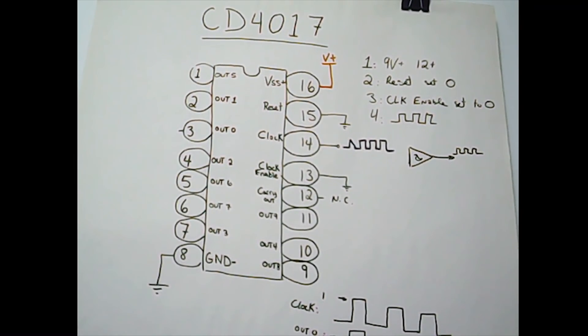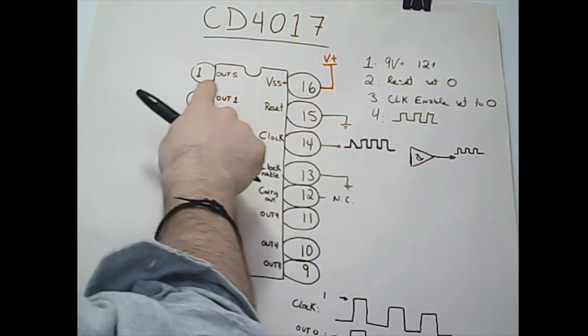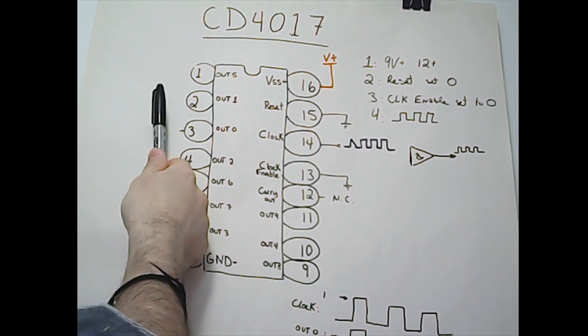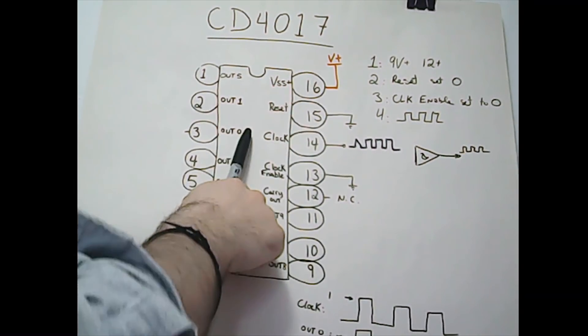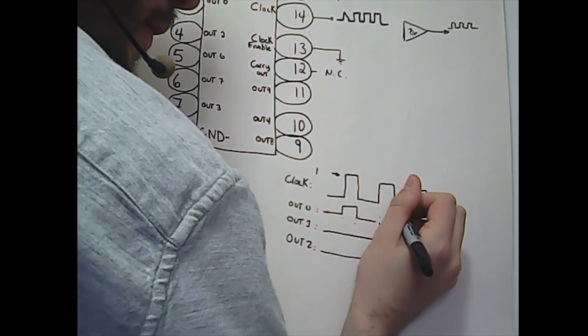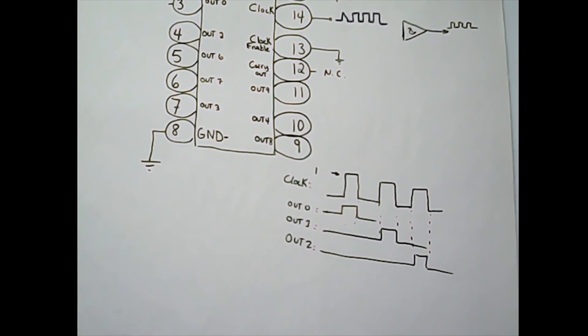The sequence continues until it reaches output 9 or until the reset pin is triggered. I'll show you later how to use this input to reduce the sequence to less than 10 steps - if you want an eight-step sequencer, for example. It's important to notice that each output will be perfectly synced with the clock.